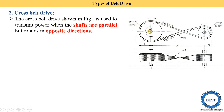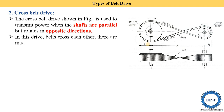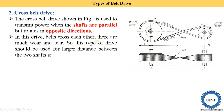Cross belt drive is used to transmit power when the shafts are parallel but rotate in opposite directions. If the driving pulley rotates clockwise, the driven pulley rotates anticlockwise. When we require pulleys to rotate in opposite directions we use the cross belt drive; for same direction rotation we use the open belt drive. In this drive the belt crosses itself, so there is much more wear and tear. These drives are used for larger distances between the two shafts and for lower speeds.